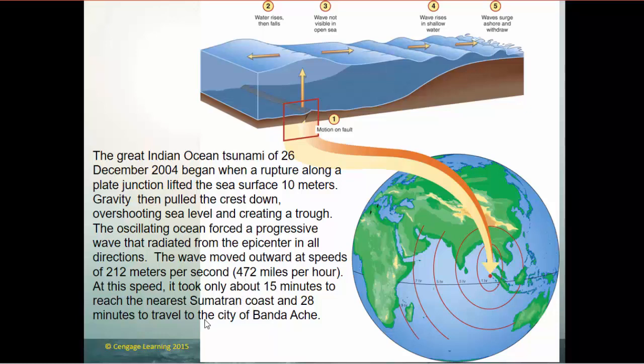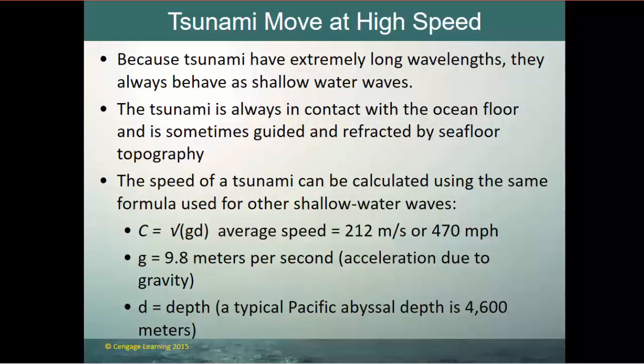Because tsunamis have extremely long wavelengths, they are always in shallow water and always behave as shallow water waves, sometimes guided and refracted by seafloor topography. The speed of a tsunami is calculated using the shallow water wave formula: c = √(g × d), where gravity is 9.8 m/s² and the depth of the Pacific abyssal area is about 4,600 meters — giving an average tsunami speed of about 212 meters per second, or 470 miles per hour.